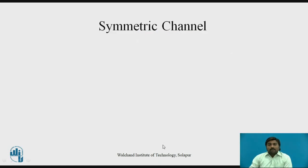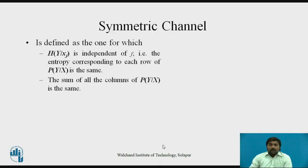Now let us consider the symmetric channel. A symmetric channel has two conditions. The first condition is that the conditional entropy H(y|x) — obtained by observing the source — is independent of j, meaning the entropy corresponding to each row has the same value. The second condition is that the sum of all elements in each column is the same.